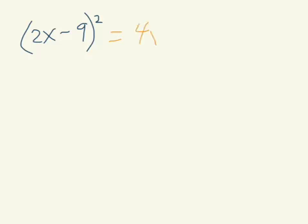So do not try this. 2x times 2x, 4x squared. Negative 9 times negative 9, 81. And think you're done. No. That does not work.